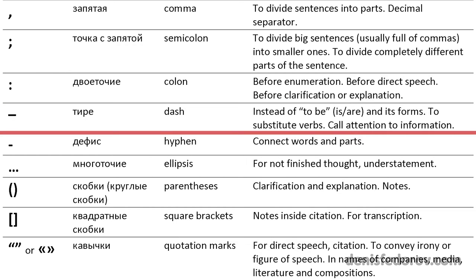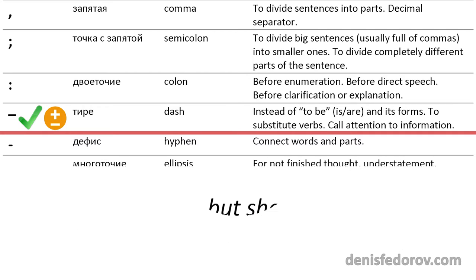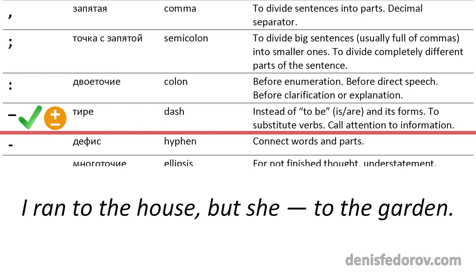Dash — тире in Russian — is used for several purposes. Generally we use it the same as in English, but we use it wider and in more situations. The main difference is that we use dash instead of 'to be' in Russian, because we do not use 'to be' or its forms like 'is' or 'are.' So we often place a dash instead of them. Also, dash is used to substitute verbs — when you won't repeat the same verb, you place a dash, like 'I ran to the house, but she — to the garden.'